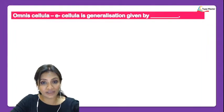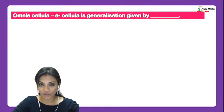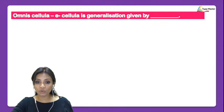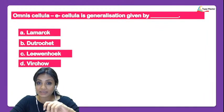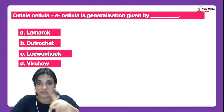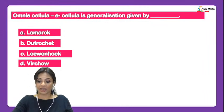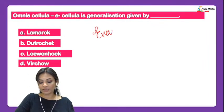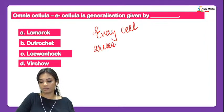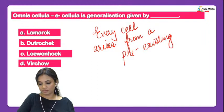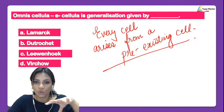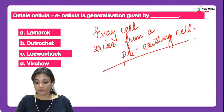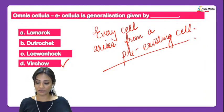Next: remember the phrase Omnis cellula e cellula — who gave this phrase? Before identifying the scientist, let's remember what it means: every cell arises from a pre-existing cell. This is what we call Omnis cellula e cellula, and the scientist who stated this was none other than Rudolf Virchow.